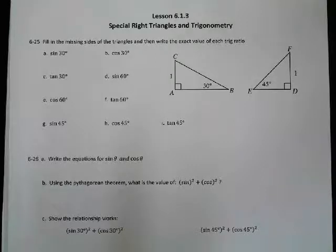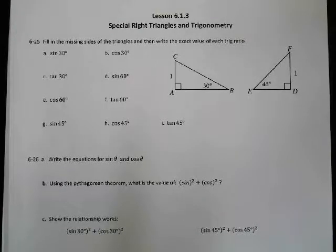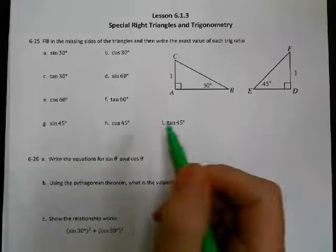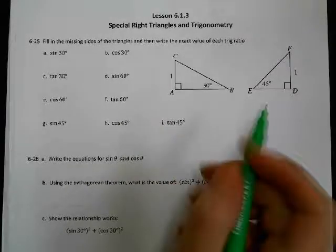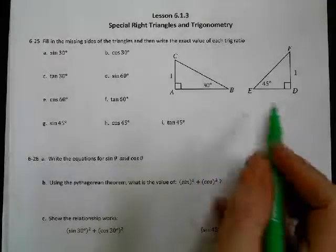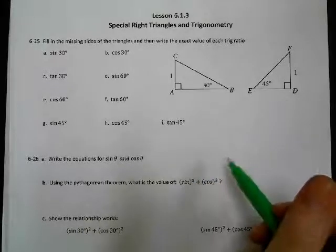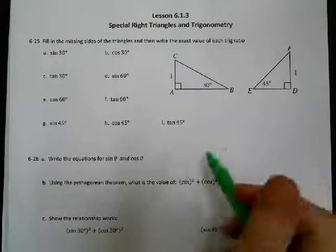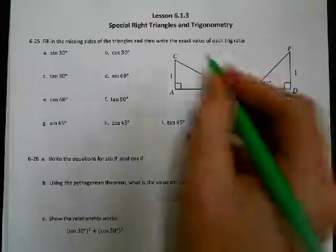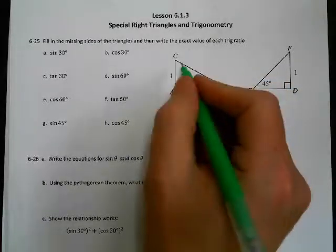All right. We've got Lesson 6.1.3, Special Right Triangles and Trigonometry. So here we've got our two patterns of a 30-60-90 triangle and a 45-45-90 triangle. We're going to fill in what the pattern is going to be.